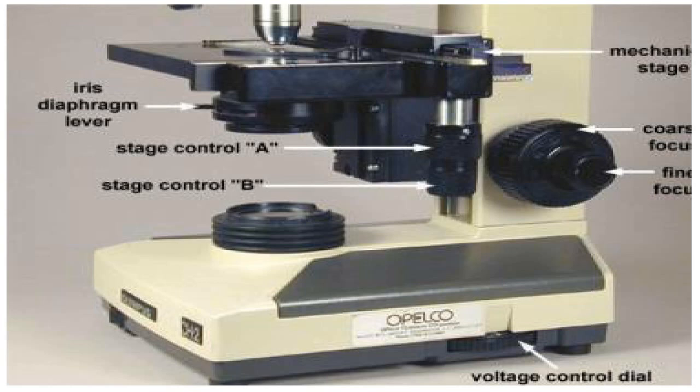In addition, the below parts of the light microscope are: mechanical stage, coarse focus and fine focus knobs, iris diaphragm lever, stage control A, stage control B, and finally voltage control dial.